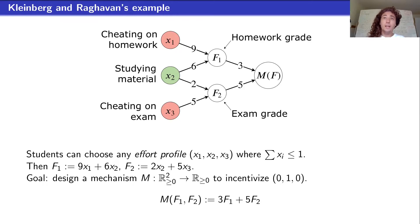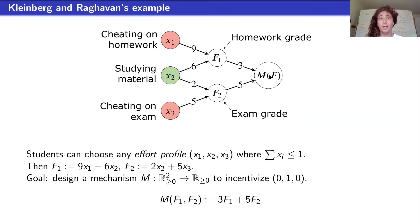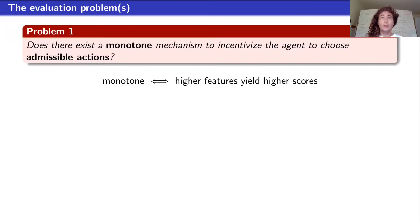But if you weight them just right — if the final grade is 3F1 plus 5F2 — then studying the material becomes the best action. Why? Cheating on homework gives a marginal benefit of 9×3 = 27. Cheating on the exam gives 5×5 = 25. But studying the material gives 6×3 + 2×5 = 28. So all students will want to invest all their effort into x2. This is the solution to this problem, involving a nice linear combination of the two feature values.